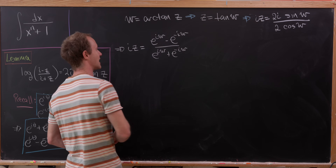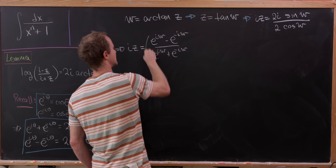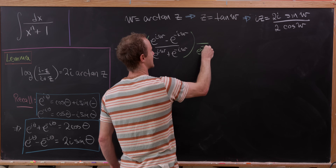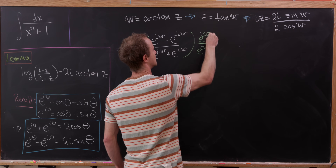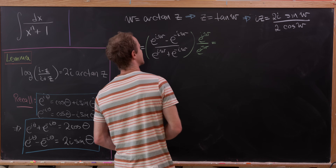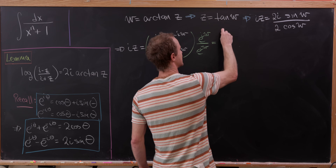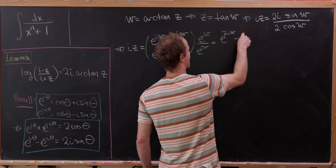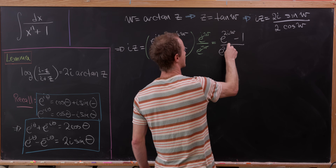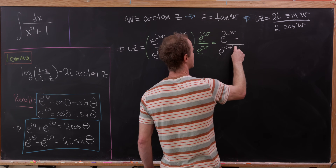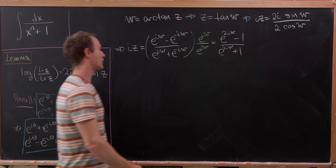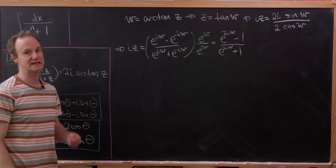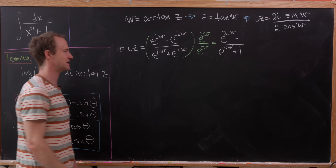We can do a simplifying multiplication by multiplying the numerator and denominator by e to the iw. That leaves us with e to the 2iw minus 1 over e to the 2iw plus 1, and now we have an equation we can solve for e to the 2iw.